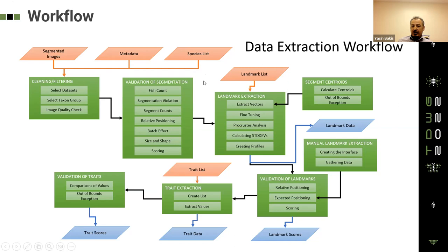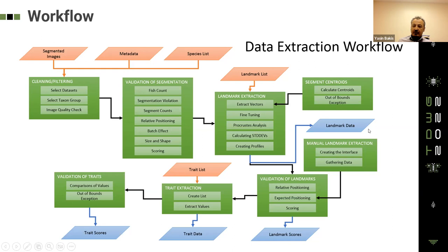We validate the segmentations by using fish counts — how many specimens are in the dataset? Sometimes there are more objects than expected, or there are positioning issues. When images come from different batches and datasets, there are always some batch effects. There are also size and shape-related issues. We assign a scoring for each segmentation based on those validations.